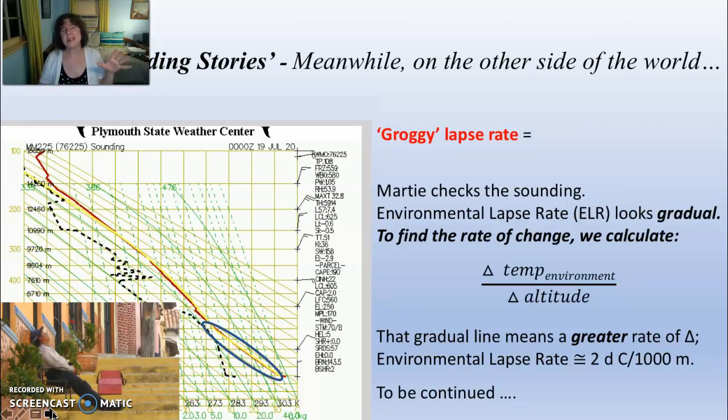Marty goes and checks his sounding and he sees that it's a really gradual sounding here. It's the change of temperature, which is quite a bit, over the change of altitude. He gets a lot of temperature change over his short little altitude area. This lapse rate is greater than his friend Mo. In fact, this lapse rate is 10 degrees Celsius over a little change of altitude.